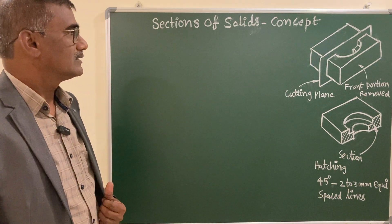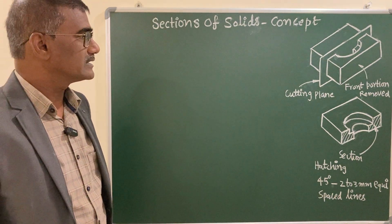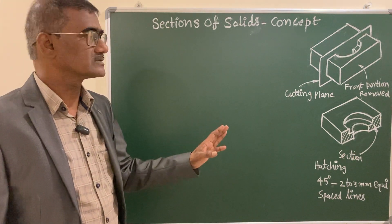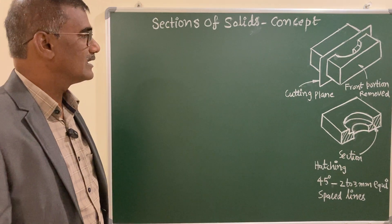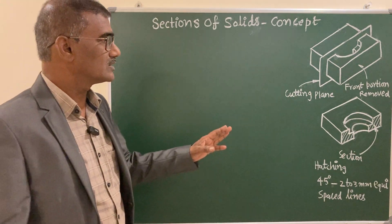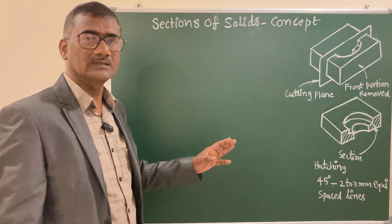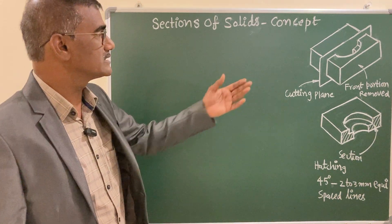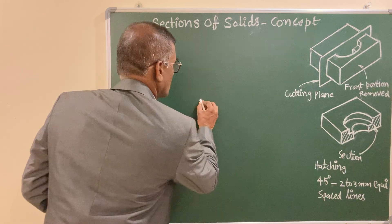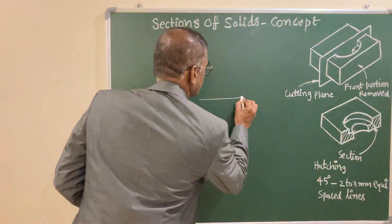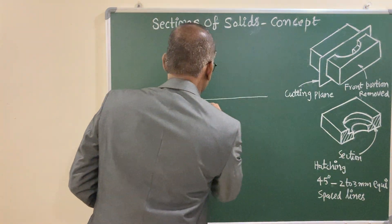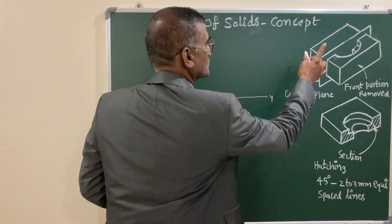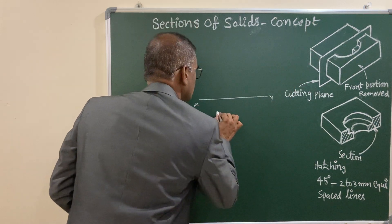The first step is you have to draw the orthographic projections of this given solid. Usually, you are going to start with the base of the solid. The base is a rectangle. Let us draw the XY reference line and the top view is a rectangle.